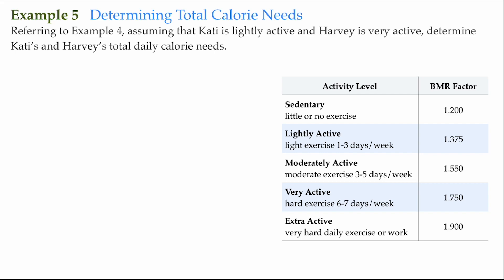Here we're going to be determining total calorie needs as opposed to a BMR. A BMR is the minimum amount of calories a person needs to maintain their weight when they're completely inactive. You can't get any more inactive than when you're asleep, so it's usually the amount of calories you need to sustain your weight while you're asleep.